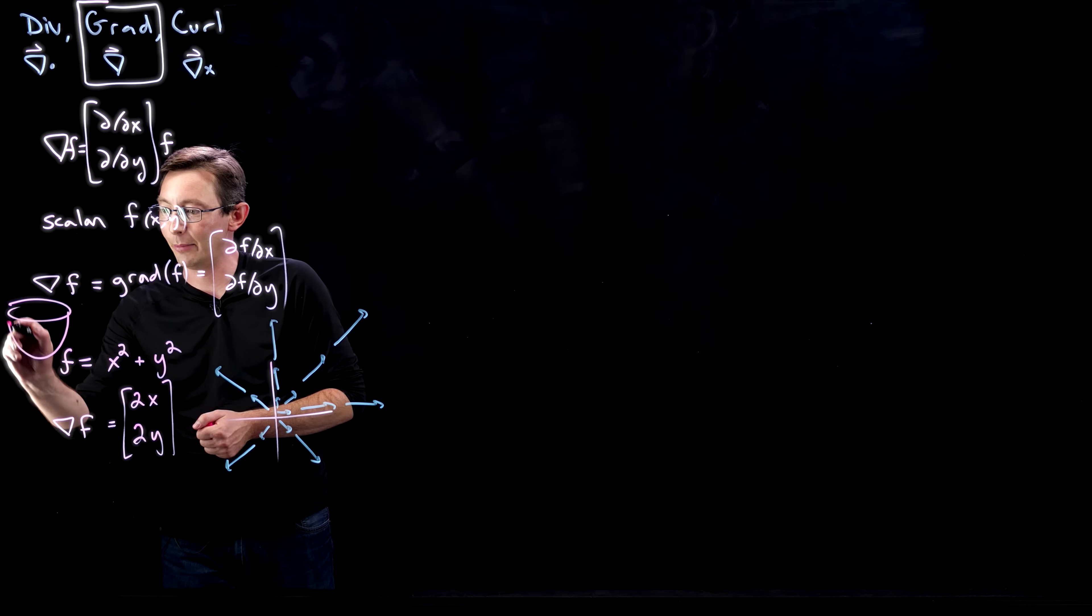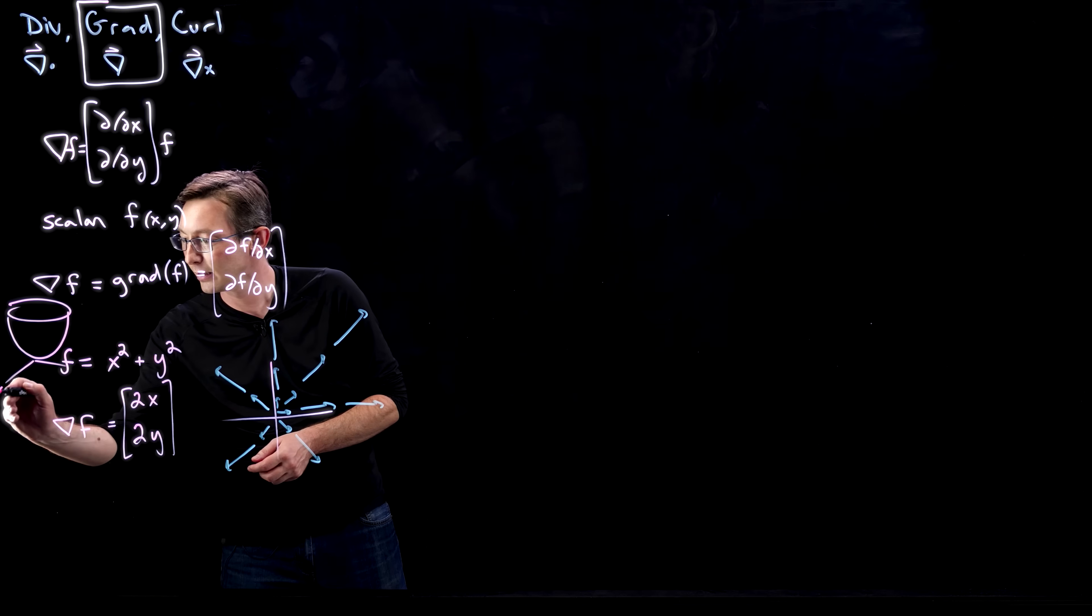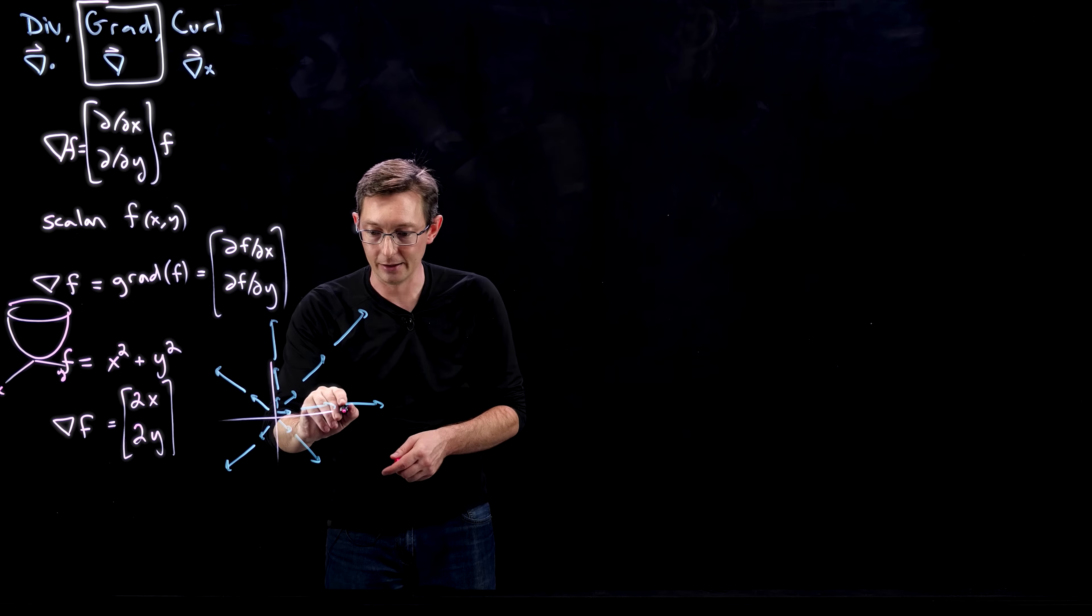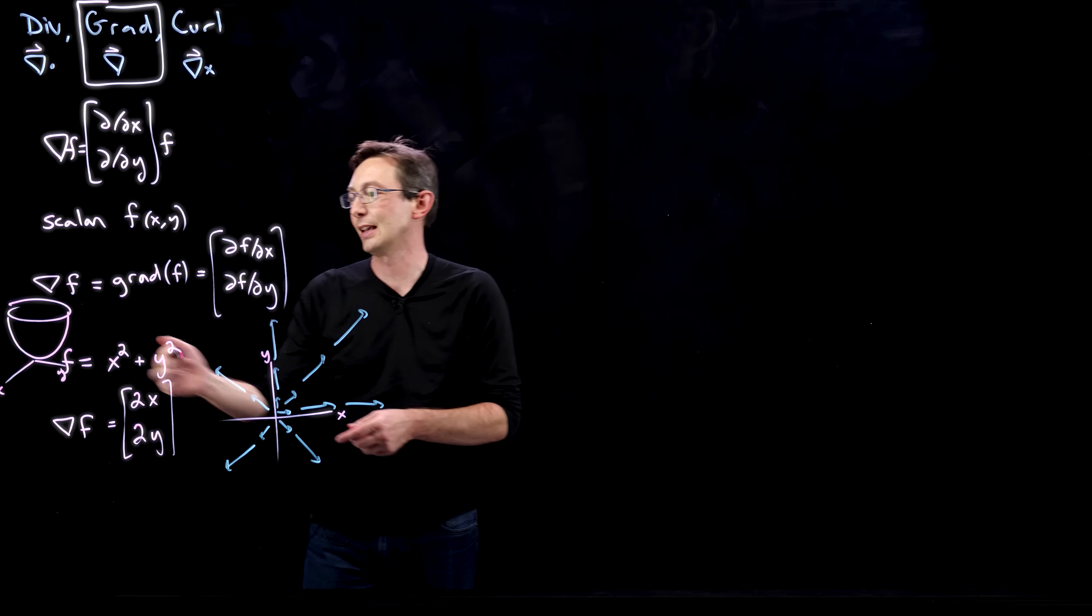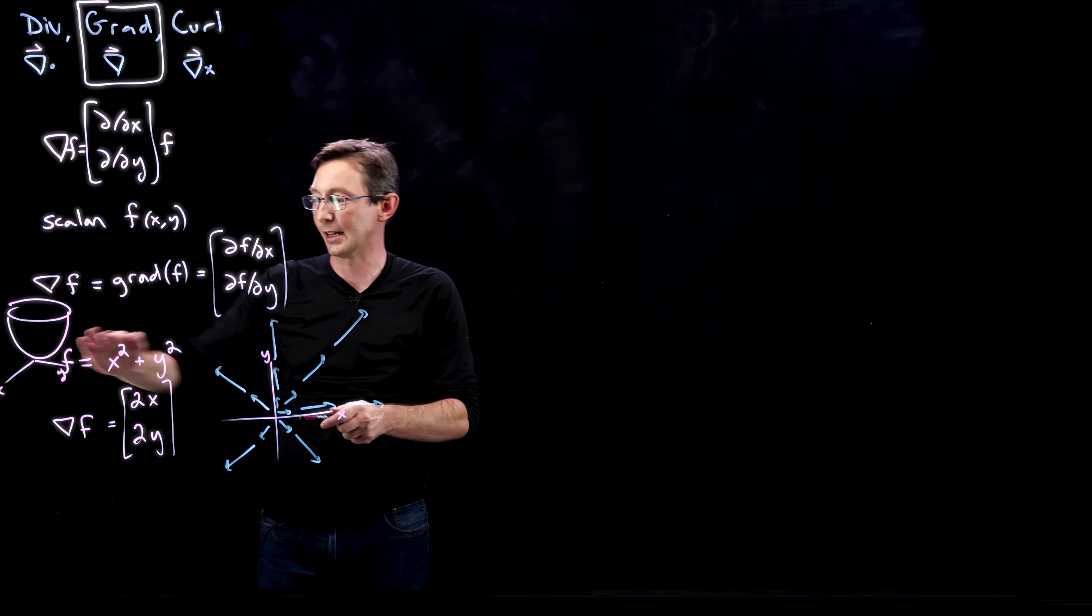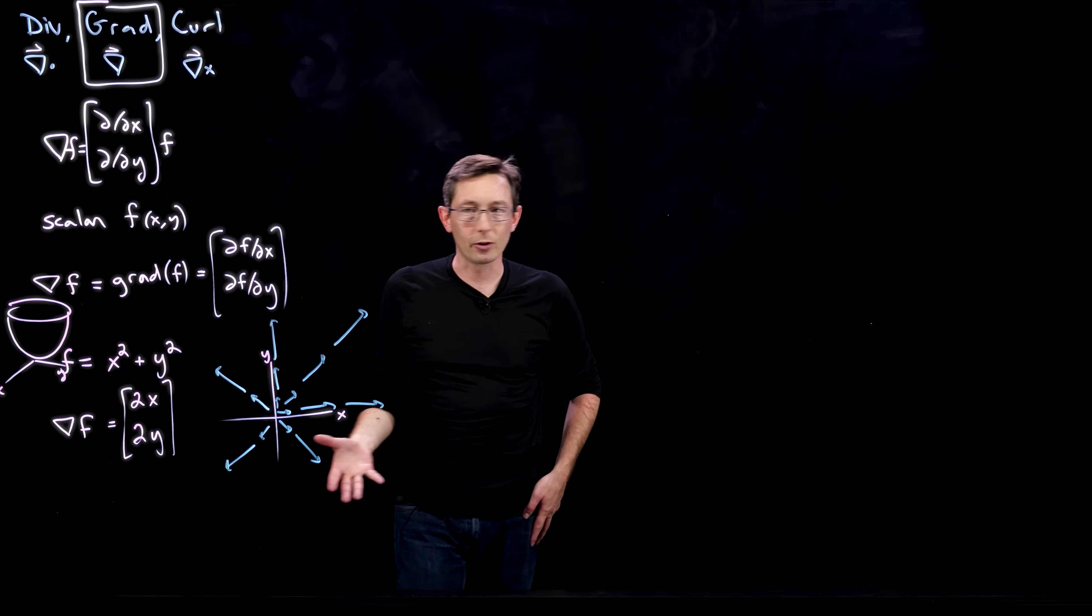This kind of makes sense because this function also gets bigger and bigger as I get higher in radius. x² + y² is literally like a big paraboloid. If I look down on this in the x-y coordinates, it kind of makes sense that my gradient increases as I go farther away because this gets steeper and steeper.